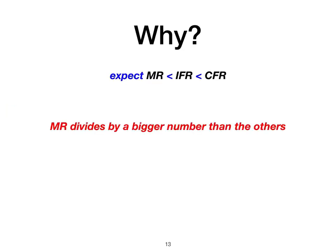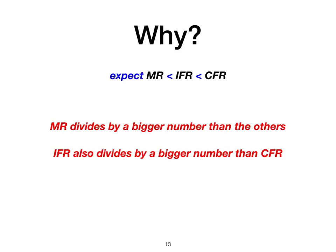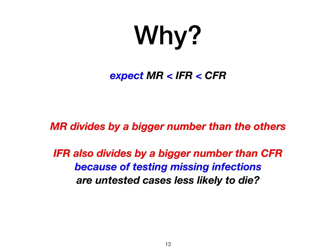Why would you expect that? MR is calculated by dividing by a bigger number — the whole population, not just those infected. The infection fatality rate divides by a bigger number than case fatality rate because testing misses some infections. The big question is whether untested cases are less likely to die. If you have reasonably good testing, probably not, because you'll be focusing on finding the more vulnerable cases, and those who don't get tested are probably the asymptomatics. On the other hand, if things run seriously out of control, a lot of people are going to be dying without being tested.